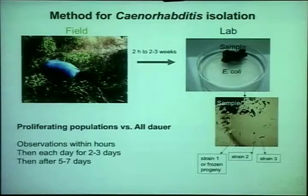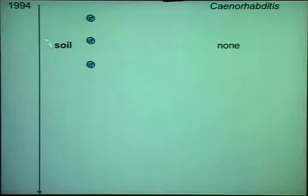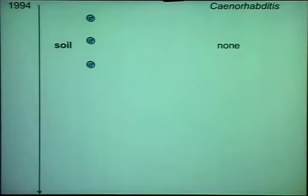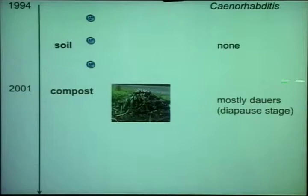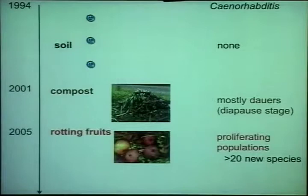I started in Paul Sternberg's lab in 1994, and the week I arrived we started sampling soil in Pasadena. We tried to find Caenorhabditis and found a lot of Oscheius and other things, but no Caenorhabditis for years and years, because people were telling me that C. elegans was a soil nematode. After seven years of desperation, with Antoine we started getting compost — not extremely satisfactory because it's artificial — but we could get natural populations of C. elegans and some diversity. We were finding 100% or 95% dauers in these populations. So where does C. elegans actually feed and reproduce was the question.